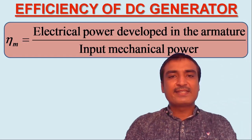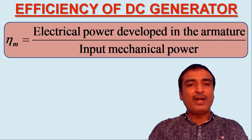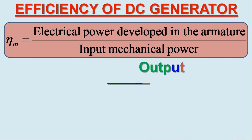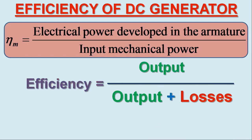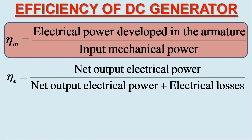In view of the second partition in the power flow separation diagram for DC generator, we may define the electrical efficiency using the alternate equation: efficiency equals output over output plus losses. So we may define the electrical efficiency of the DC generator as net output electrical power over net output electrical power plus electrical losses.